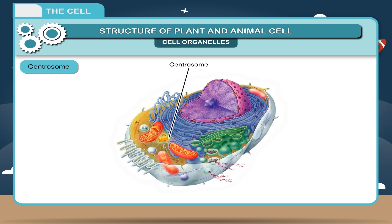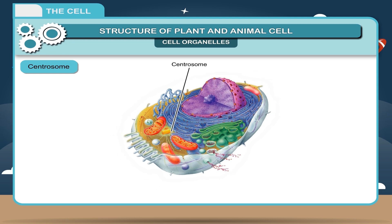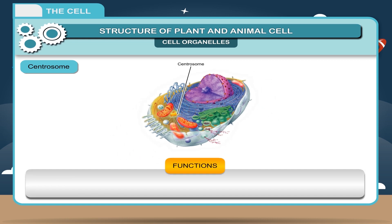Centrosome. They are star-shaped bodies present in pairs near the nucleus and are found only in animal cells. Each consists of two dot-like bodies called centrioles. Their function is to help in cell division.